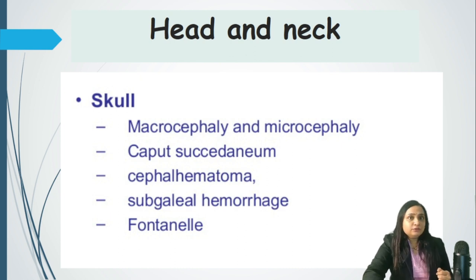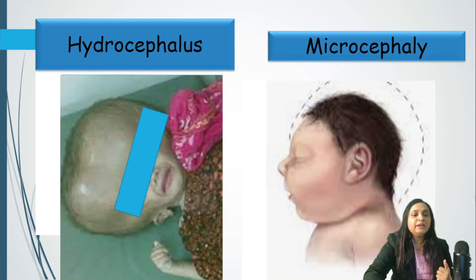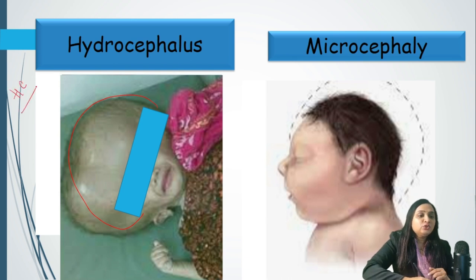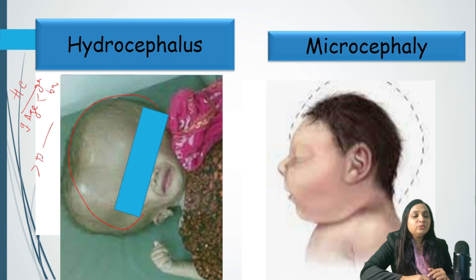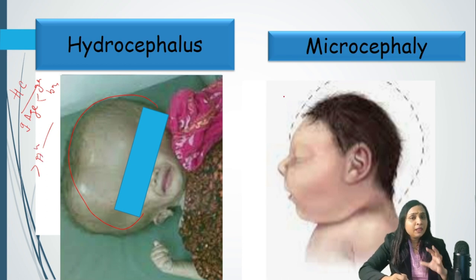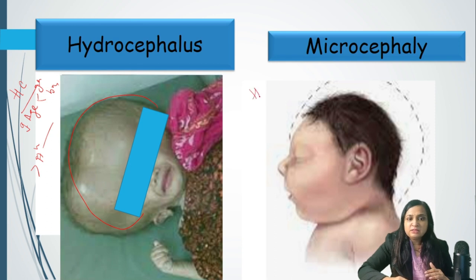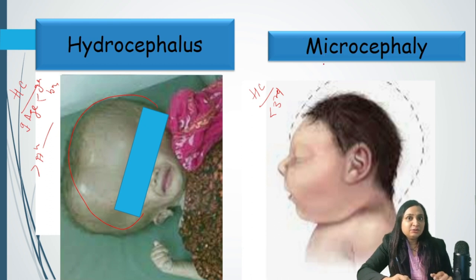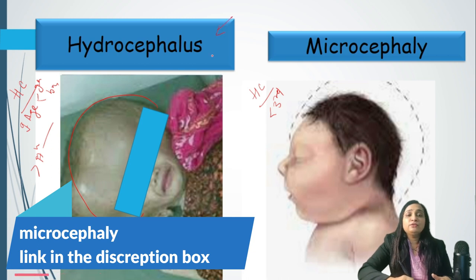After looking at the skin and color, we really start the head to toe examination. In the head, we need to see whether there is hydrocephalus — gross hydrocephalus will be visible to the naked eye; otherwise head circumference has to be plotted for gestational age and specific gender, and if it is more than the 97th centile, it is hydrocephalus. Similarly, microcephaly — if the head circumference is less than the 3rd centile, it is microcephaly, which could be because of many syndromes. Hydrocephalus could be part of TORCH or congenital aqueductal stenosis.